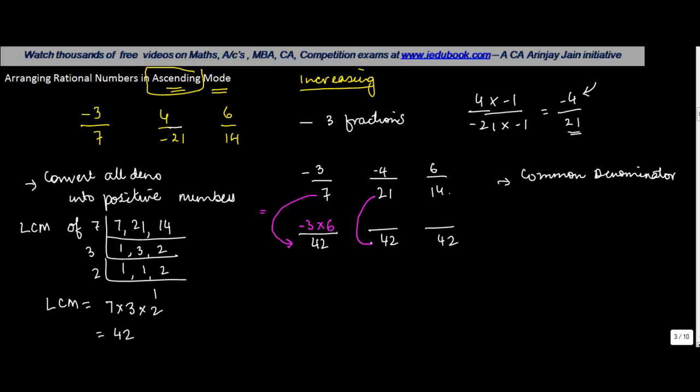To get from 21 to 42, you multiply it by 2, so you multiply the numerator minus 4 by 2. Similarly, from 14 to 42, you multiply by 3, so you multiply the numerator by 3 to ensure these are equivalent fractions. What do we get? We get minus 18 upon 42, minus 8 upon 42, and 18 upon 42.